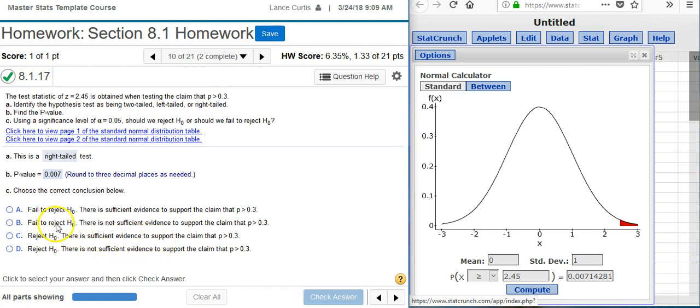If we fail to reject H-naught, there's going to be insufficient evidence to support the claim. Here, we're actually going to reject H-naught because our p-value is less than our alpha value.